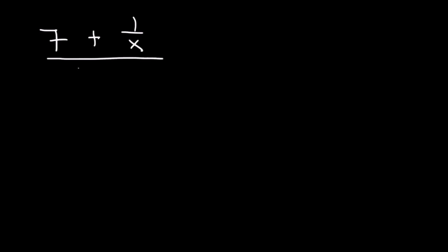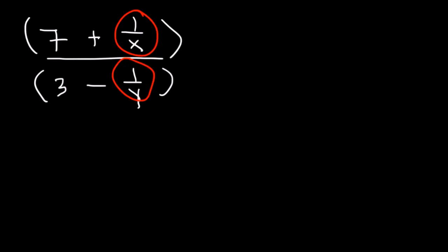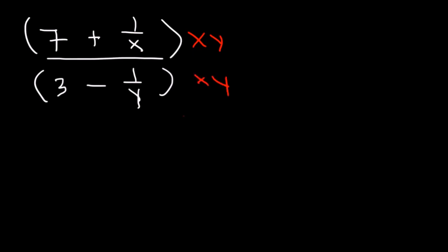Now let's try another example: 7 plus 1 over x divided by 3 minus 1 over y. What we need to do is multiply the top and the bottom by the common denominator of these two fractions, which is simply x times y. So if we multiply 7 by xy, it's going to be 7xy. 1 over x times xy — the x variables will cancel — and we're going to get y.